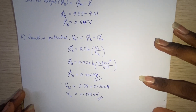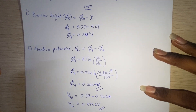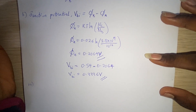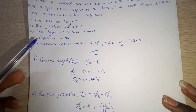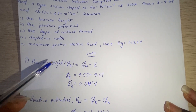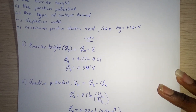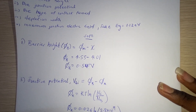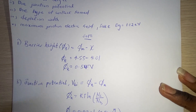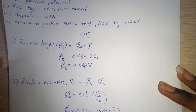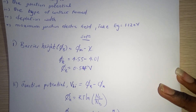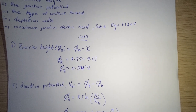Next, we are supposed to determine the type of contact formed. There are some technicalities here. When the Fermi level of the metal is greater than the Fermi level of the semiconductor and the material is N-type, then the contact formed is a Schottky rectifying contact. When it is P-type with the same condition, then it is ohmic. When the Fermi level of the metal is less than that of the semiconductor and it's N-type, then it is ohmic. But when it's P-type with the same condition, it is rectifying.